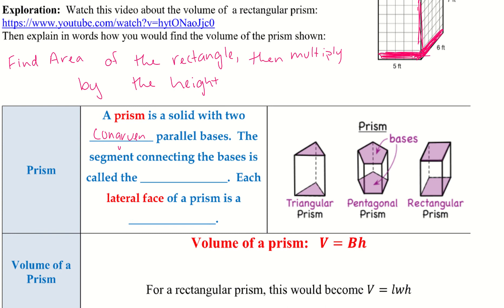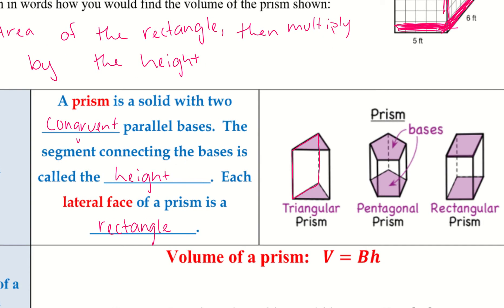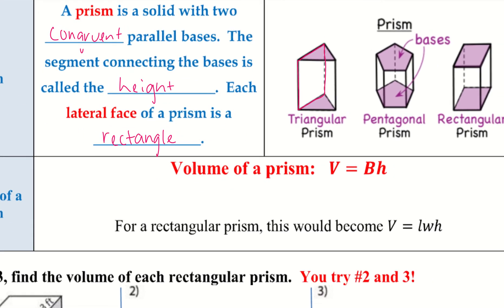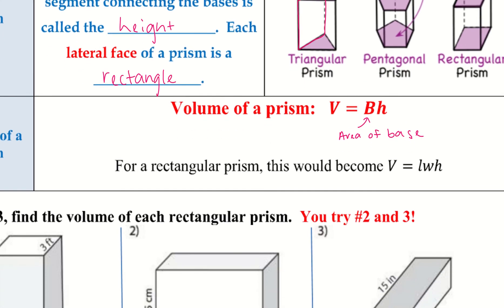A prism is a solid with two congruent parallel bases. The segment connecting the bases is called the height, and each lateral face of a prism is a rectangle. The volume of a prism equals V = B × H, where capital B stands for the area of the base. For a rectangular prism, that's length times width times height.